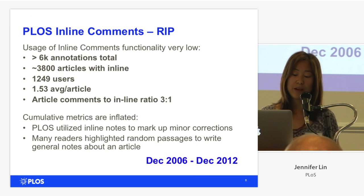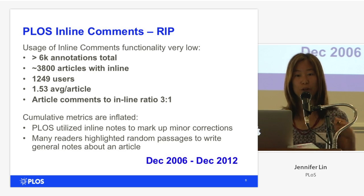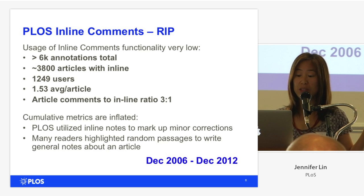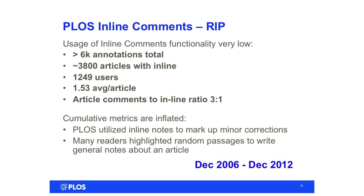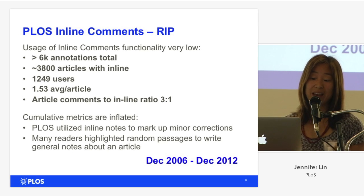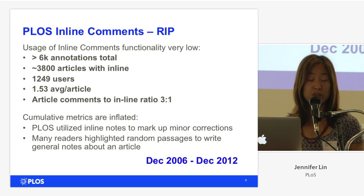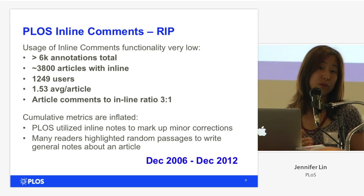One of the tools that represented one of the most basic modes of engagement alongside viewing and downloading is annotation. We termed the annotations program that we started up in December 2006. We called it inline comments, so that will be the terminology I use to reference it. What happened to the program over the six years is that we found the usage was very, very low. Less than 6,000 total in over six years. Only about 3,800 articles had inline comments. There were only about 1,200 users, and on average, for articles that did have inline comments, there was only 1.53.